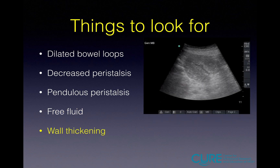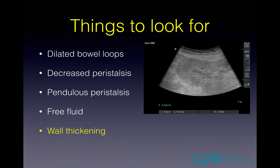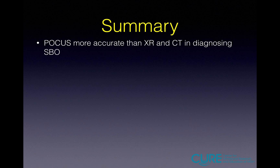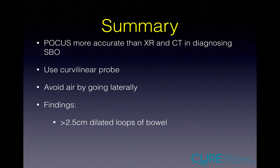Next is wall thickening. Some cases have found increased thickness of the bowel wall. Normal bowel wall is usually less than two millimeters and is considered abnormal when greater than four. This is an atypical, not specific, and not sensitive finding, so we don't routinely measure the bowel wall. In summary, point-of-care ultrasound is more accurate than abdominal x-ray and CT in diagnosing SBO. Use your curvilinear probe, avoid air by going laterally, and remember the pertinent findings: dilated loops of bowel more than 2.5 centimeters and decreased or pendulous peristalsis.